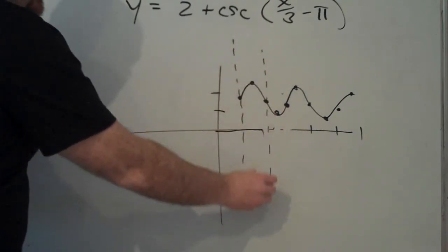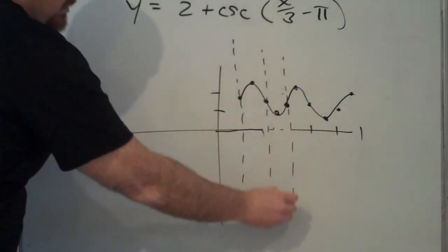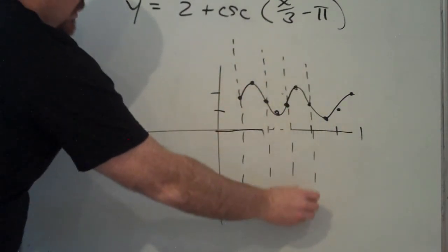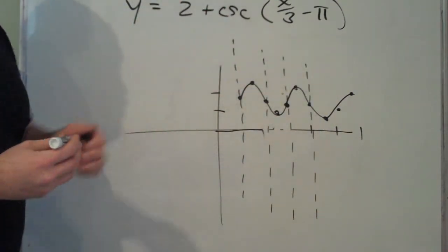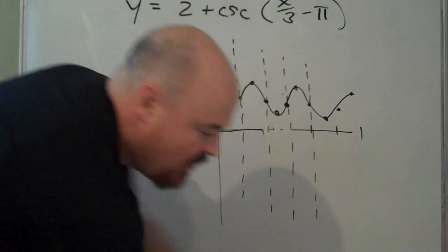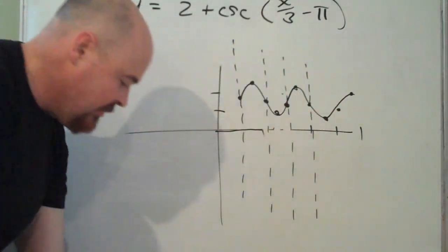Wherever the intercept points were supposed to be, you put asymptotes on your graph. Asymptote, asymptote, asymptote, asymptote, asymptote. Every single point that was supposed to be an intercept, we're going to make an asymptote.